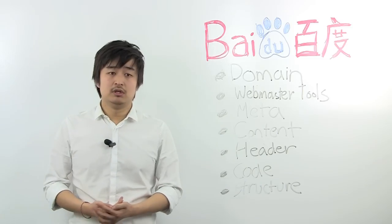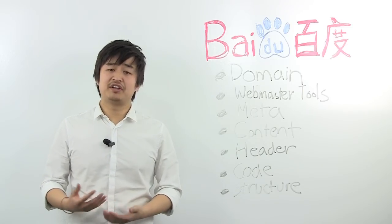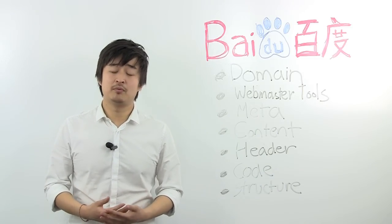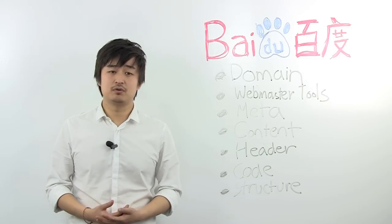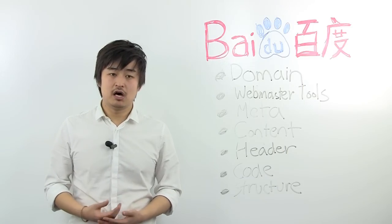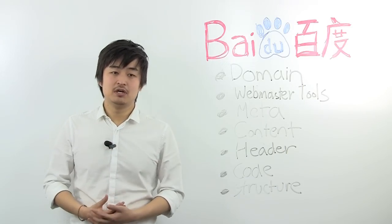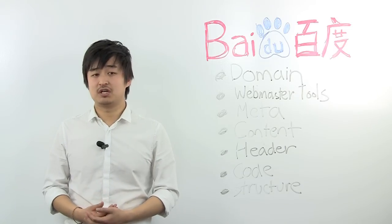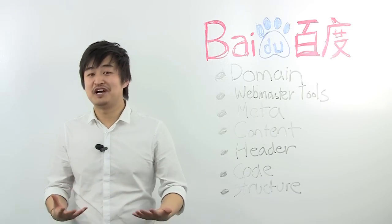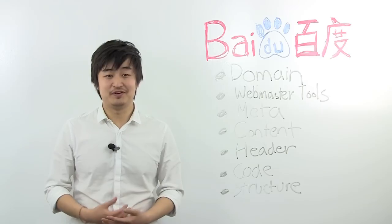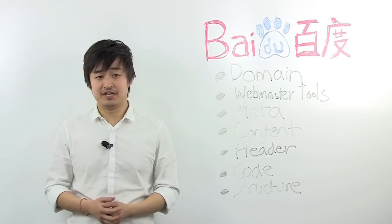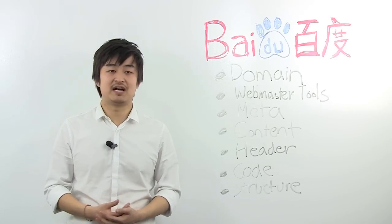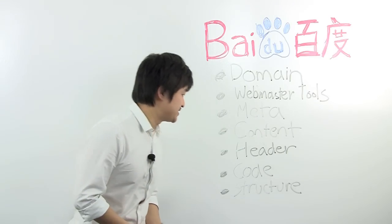Next up is content. Baidu does rank English content. They have partnered up recently to display English results, but this is halfway down the page. So if you want to dominate Baidu, you will need to use simplified Chinese. You don't have to learn Chinese. If you don't know how to write Chinese, get a translator, translate your website, but make sure it's in Chinese. It's very important.